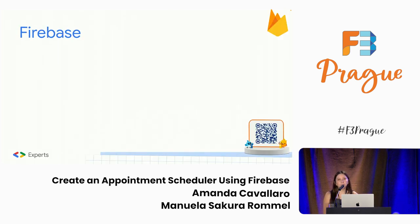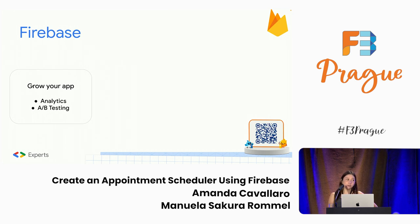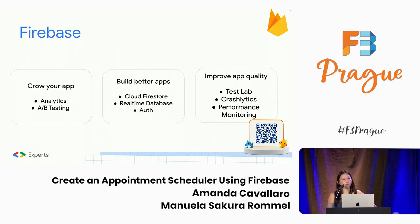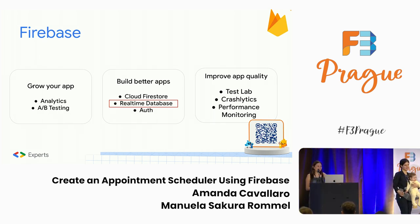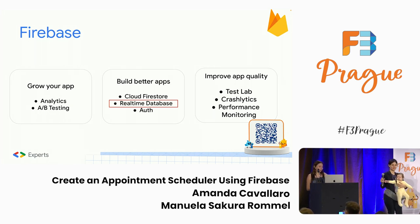Before we start building our app, let's talk about Firebase. Firebase consists of three main product branches: the first one is grow your app, the second one is build better apps, and the third one is improve app quality. We are focusing today on the real-time database, which is one of their database products. We have two database products, and Cloud Firestore is the second one.